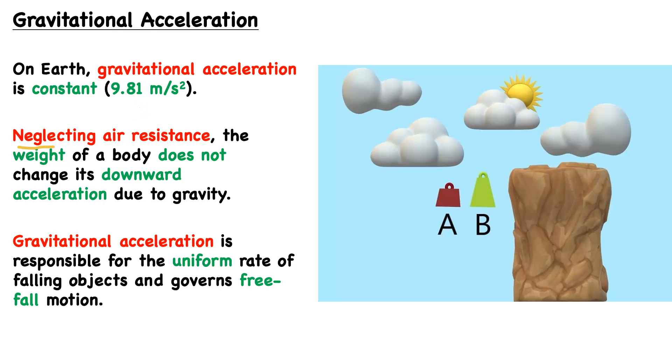If we are to neglect air resistance, the weight of a body does not change its downward acceleration due to gravity. This is perhaps very counterintuitive. We have an example here on the right where we have one smaller weight, so this isn't just smaller in terms of size, it weighs less, it has less mass.